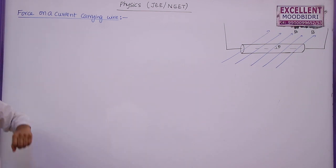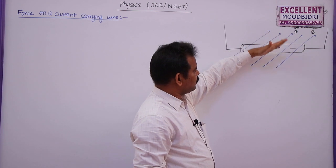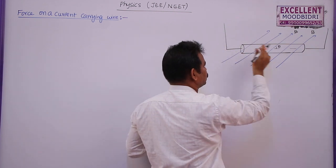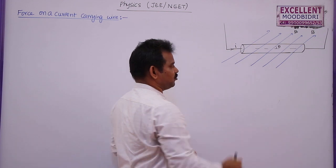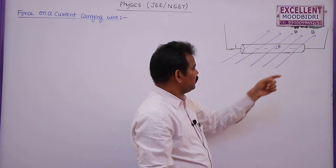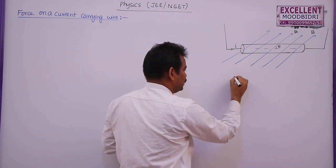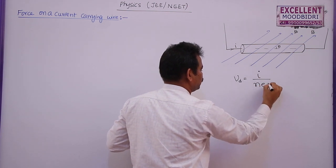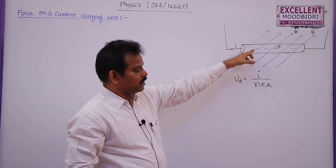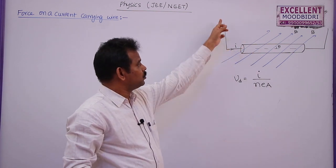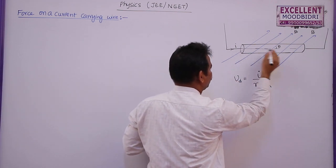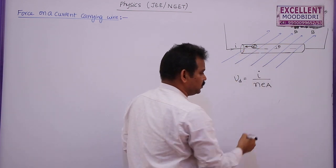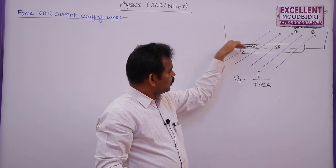Today's topic is force on a current-carrying wire. A magnetic field is inclined at angle theta with the x-axis, and a current-carrying wire is placed here, connected to a battery. The current is entering from this end. Whenever current flows through a wire, the drift velocity of charged particles is given by Vd = I/Nea. If current flows from left to right, electrons move from right to left — opposite to the current direction.